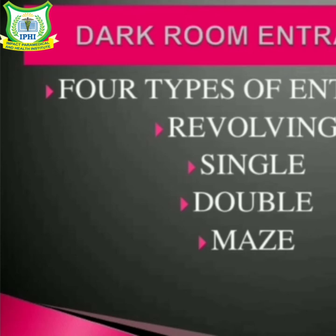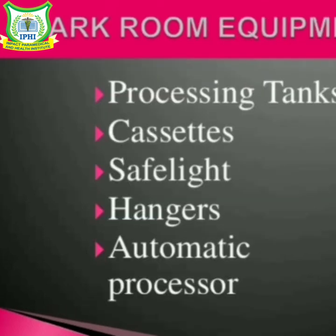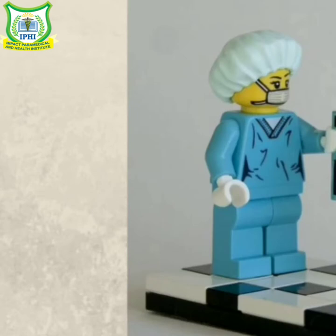Now let us discuss about a cassette film. A cassette is designed to hold the X-ray film and intensifying screens in close contact. The front face, which is of aluminum and plastic, faces the tube, while the other side has a sheet to absorb backscatter. Screens and cassettes are made in various sizes to correspond with standard film sizes.